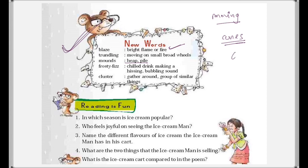'Frosty fizz' was used for the drinks and it means a chilled drink making a hissing or bubbling sound. Have you ever noticed when you open a bottle of cold drink it has a bubbling sound? That's called frosty fizz. 'Cluster' means to gather around — a group of similar things. We took the example of honeybees clustering around the flower bed, and in the same way children cluster around the cart.